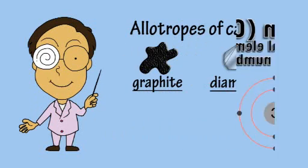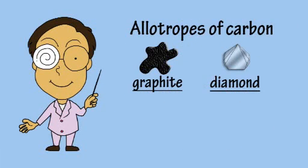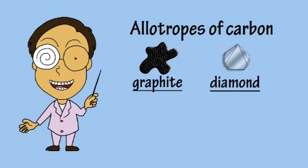In its elemental form, carbon can exist as different allotropes, such as graphite and diamond, which have very different properties.